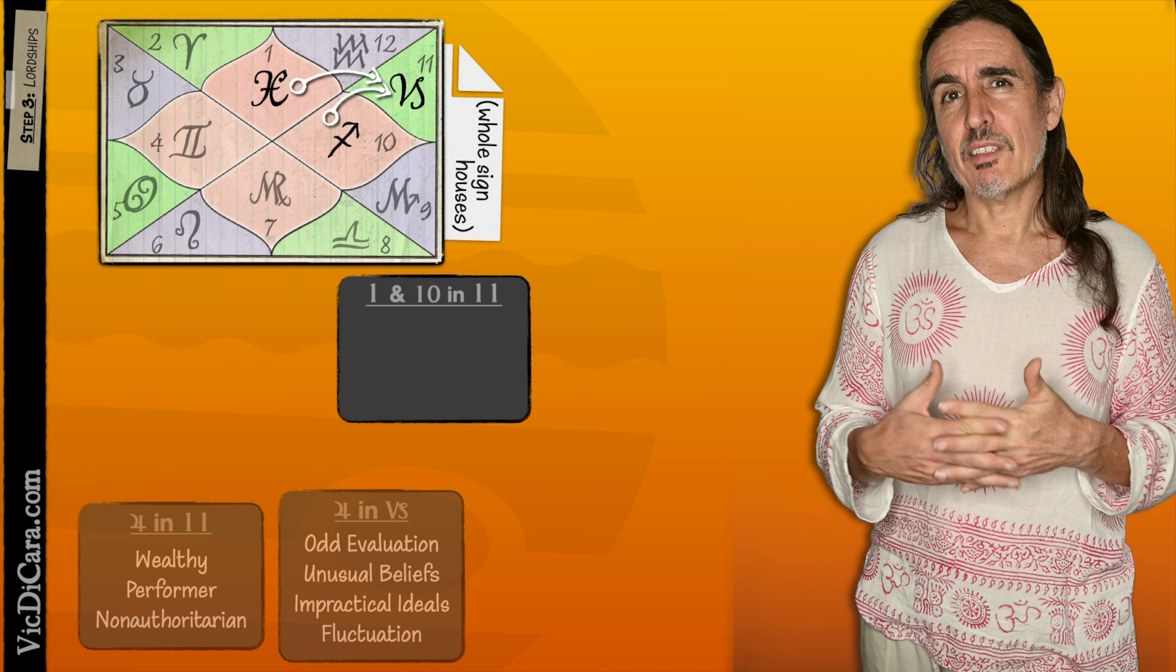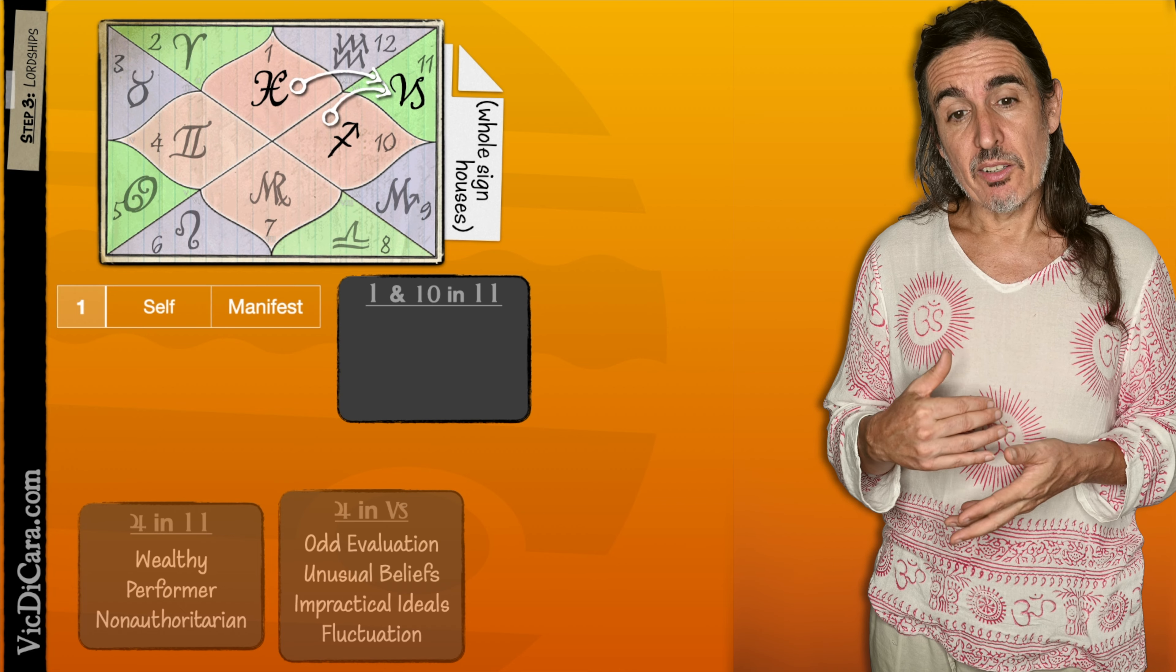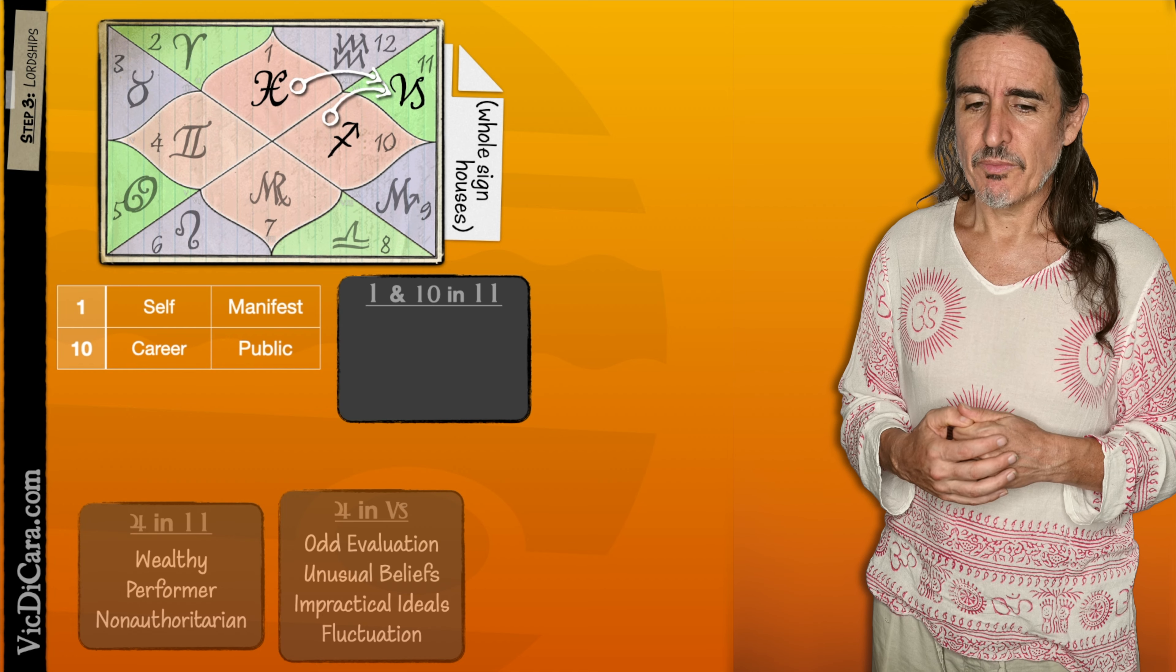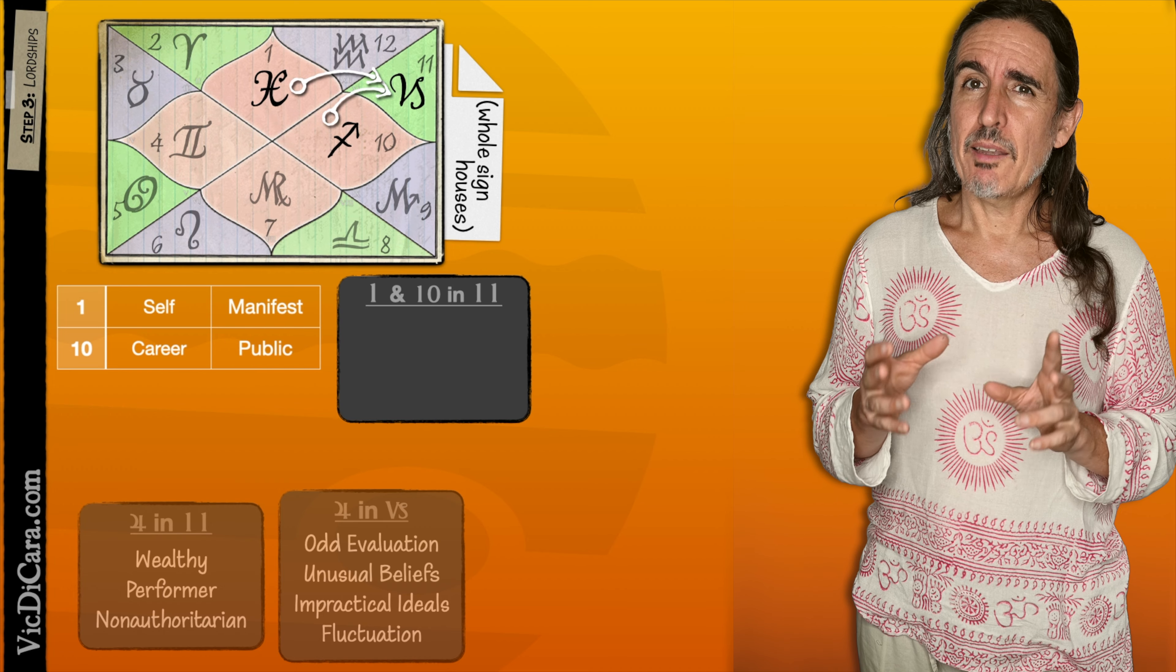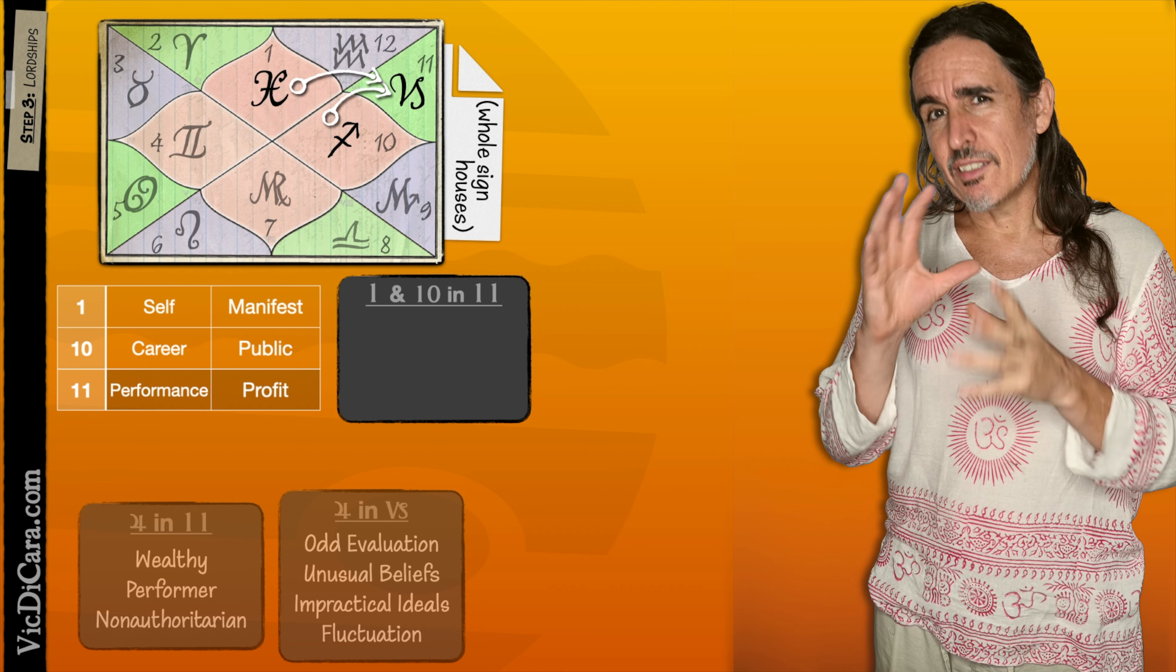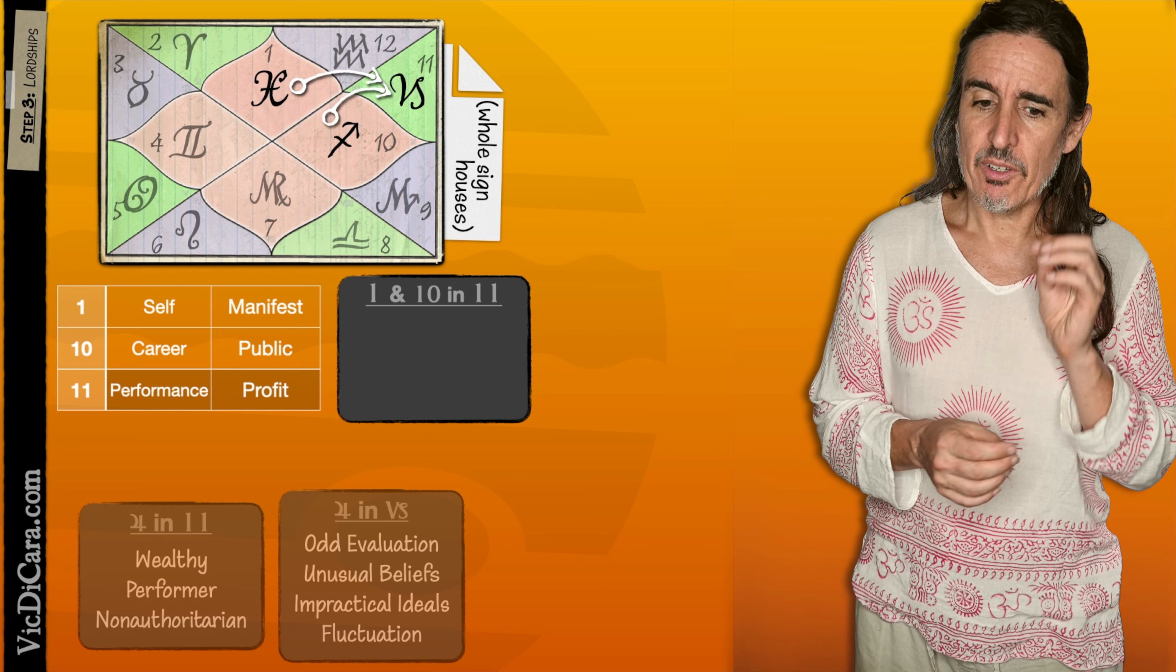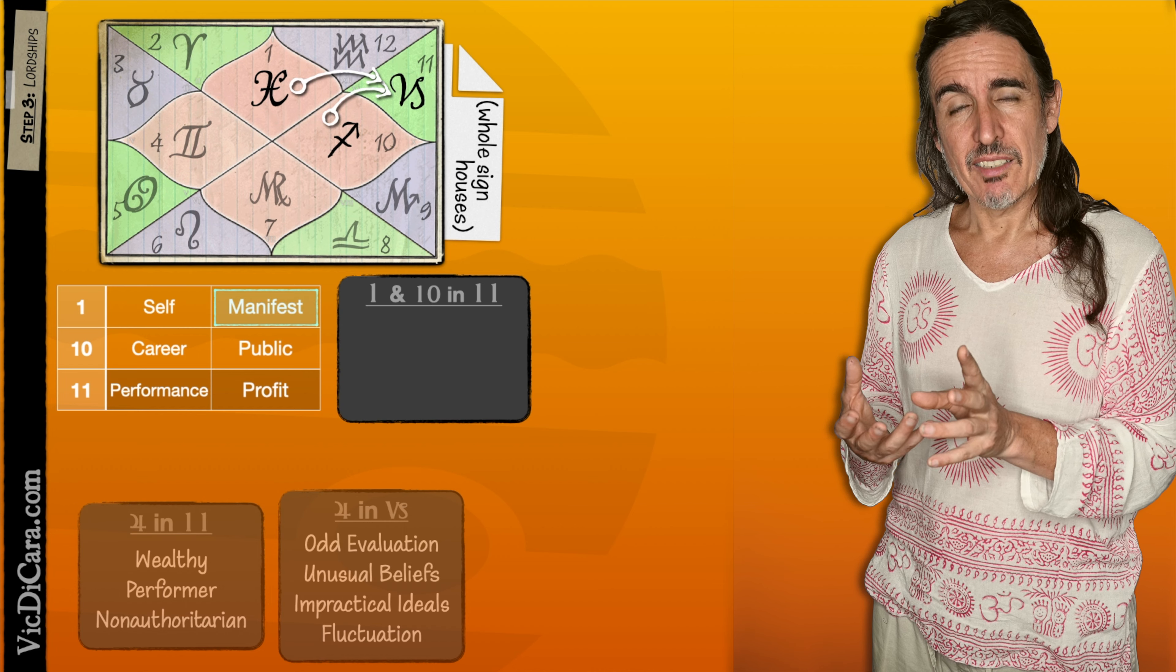So what does that symbolize? Well, the 1st house symbolizes the self and manifestation of things. The 10th house symbolizes the career and the public world, the manifest world, the visible world. The 11th house symbolizes performance talent and ability to enjoy profits. So now you can use this set of symbolisms to understand what the 1st and 10th Lords in the 11th house represent. For example, the 1st Lord is all about manifest things, tangible things.